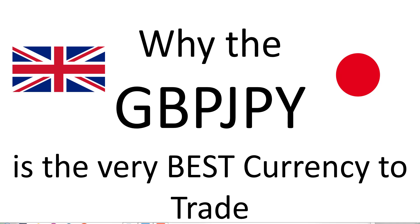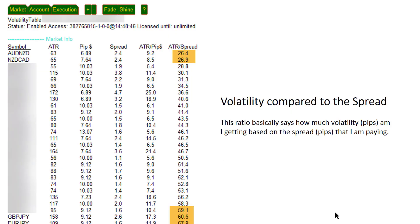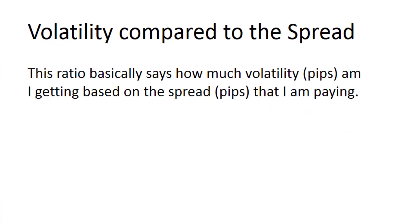The first factor that more advanced Forex traders take into account is volatility — specifically the volatility they are buying with the spread. In other words, how much value are you getting, where value is represented by volatility and the spread is the price you pay. Both are measured in pips. Volatility is required to provide gains on trades, so the more a currency moves, the more chance you have of identifying and catching trends.